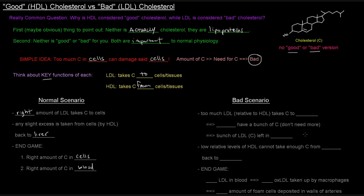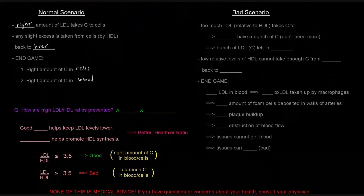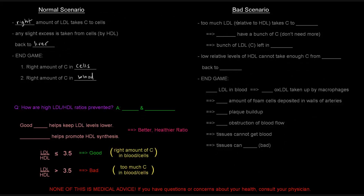The bad scenario — what does that look like? In the bad scenario, we have too much LDL relative to HDL taking cholesterol to cells. These cells have a bunch of cholesterol and they don't need more. So what ends up happening is that these cells don't want to take up any more cholesterol from these LDL particles.